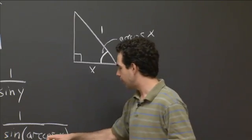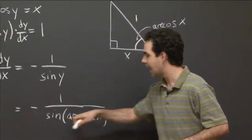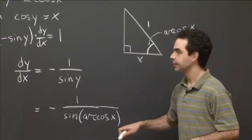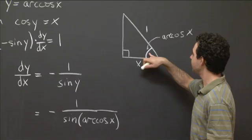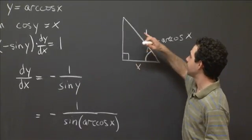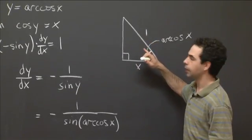So why do I care? Because I need sine of that angle. So this is the angle arc cosine of x. So sine of that angle is the opposite side over the hypotenuse. And what's the opposite side? Well, I can use the Pythagorean theorem here. And the opposite side is square root of 1 minus x squared.